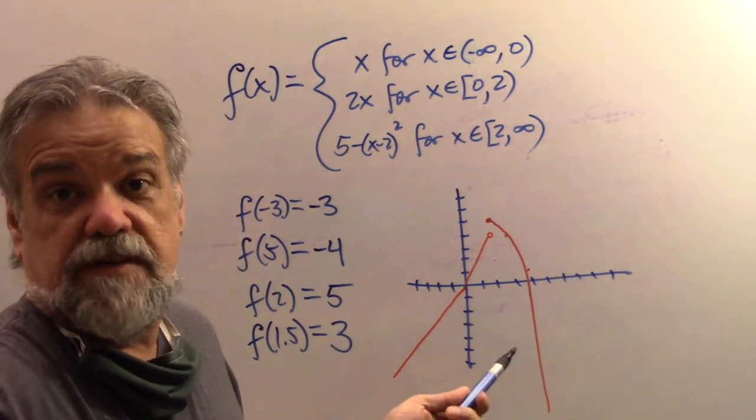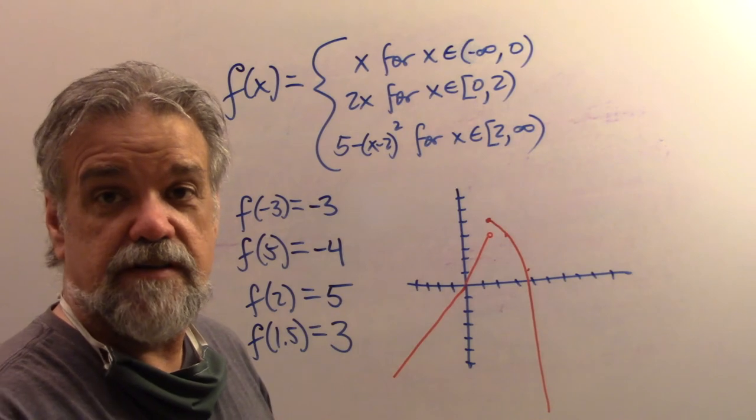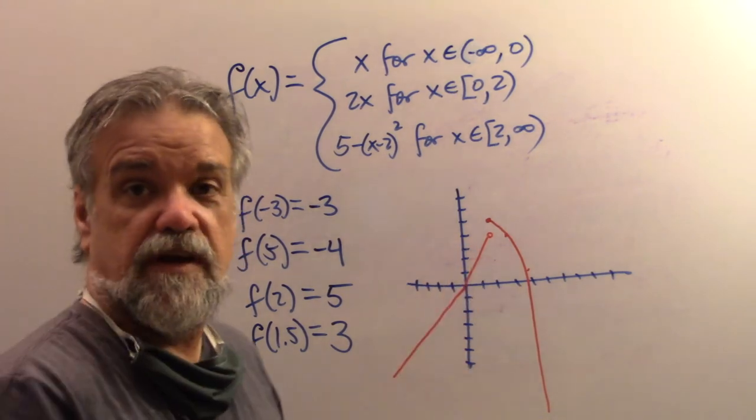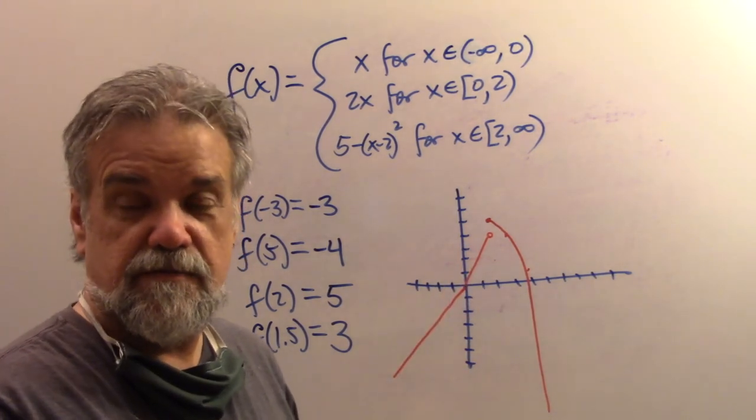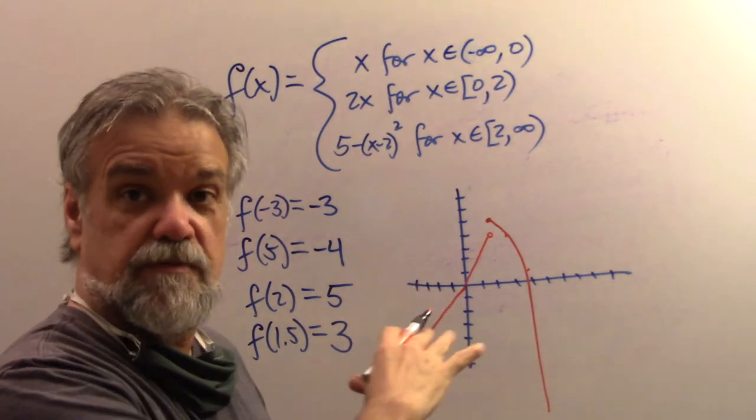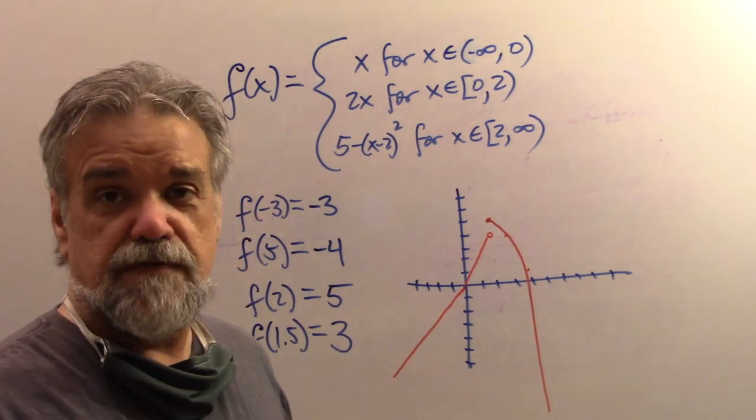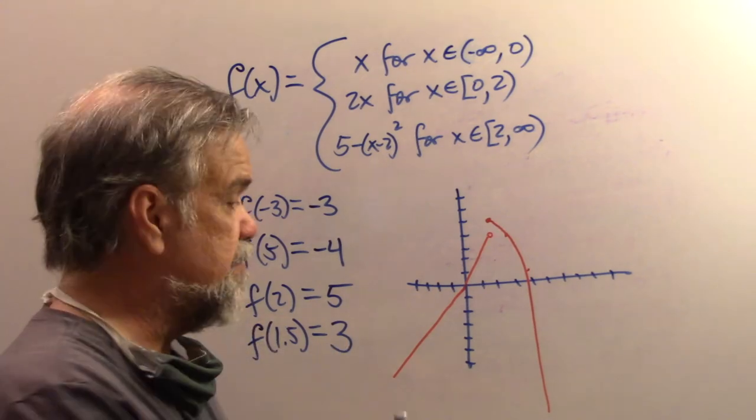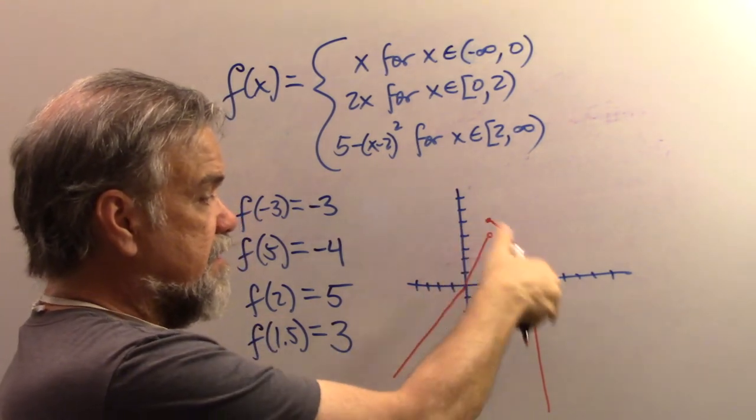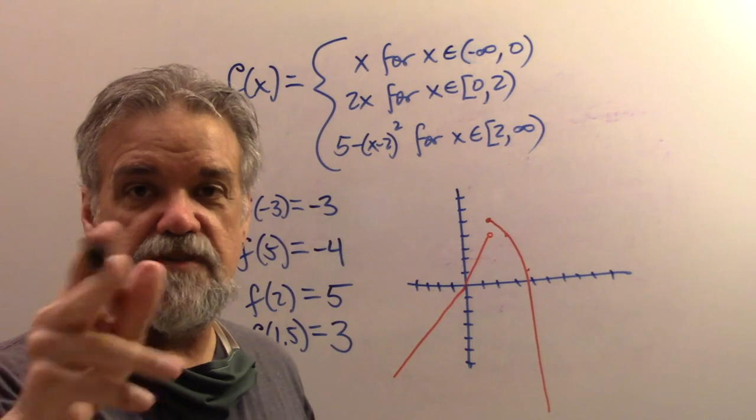Weird looking function, but it's a function. There's nowhere in here you can draw a vertical line and hit it in more than one place on the graph. So it's definitely a function. It's just a function that is defined in three different pieces, this piece, this piece, and this piece. That's why it's a piecewise function.